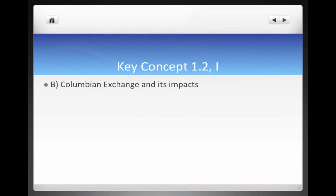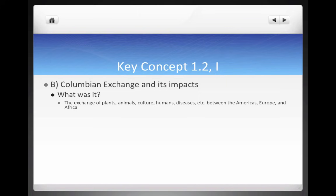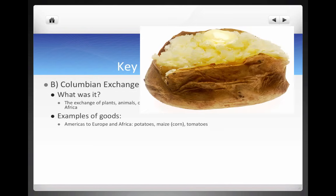What are the impacts of the Columbian Exchange? First, what is it? It's the exchange of plants, animals, culture, humans, diseases, and more between the Americas, Europe, and Africa. From the Americas to Europe and Africa, we have potatoes and maize — which we talked about in the Key Concept 1.1 video, mostly cultivated in the southwest portion of the present United States. We also have tomatoes.